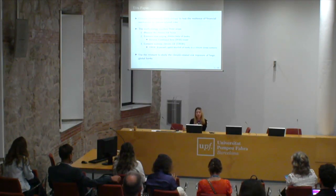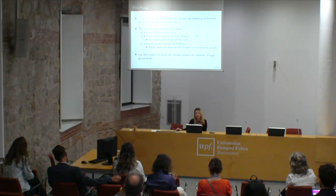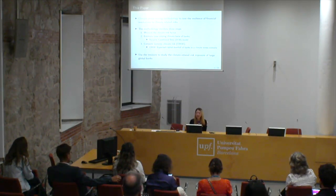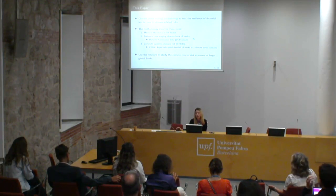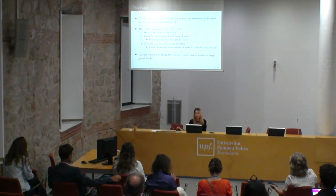In this paper, we develop a climate stress testing methodology to test the resilience of financial institutions to climate-related risks. Our market-based methodology involves three steps: first, measure the climate risk factor; second, estimate each bank's climate beta — capturing its climate risk exposure to that factor; third, compute systemic climate risk, which we call C-risk — defined as the expected capital shortfall of banks in a climate stress scenario. We apply this to large global banks.